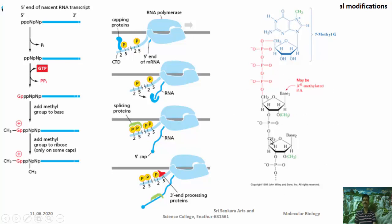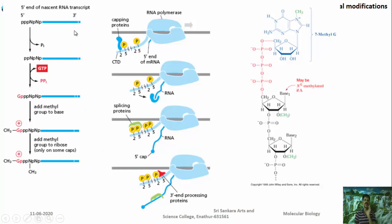There are different types of cap structures: cap zero, cap one, and cap two. In cap zero, the nucleotides following the cap are not methylated. If the first residue is methylated, it is cap one; if the second residue is methylated, it is cap two. The capping reaction proceeds by: first, the 5' nucleotide loses one phosphate (triphosphate to diphosphate); then GTP is added; then the guanosine is methylated to form 7-methylguanosine.